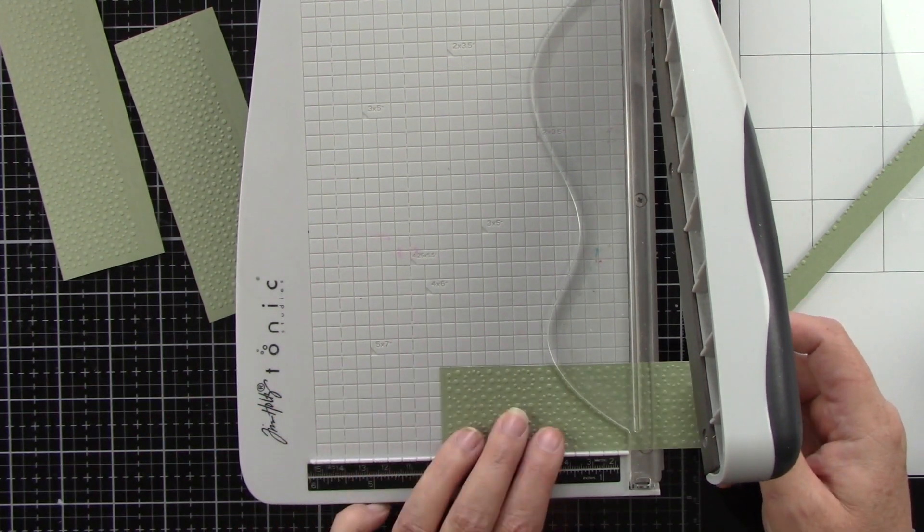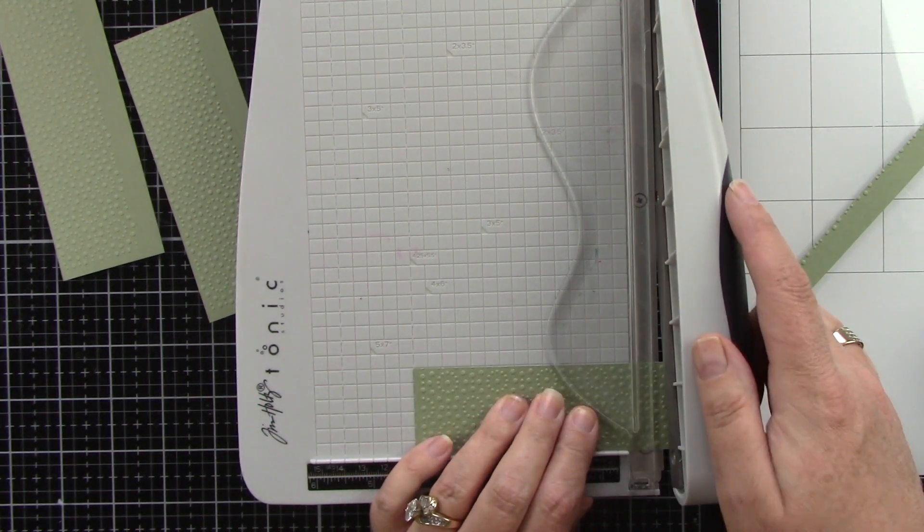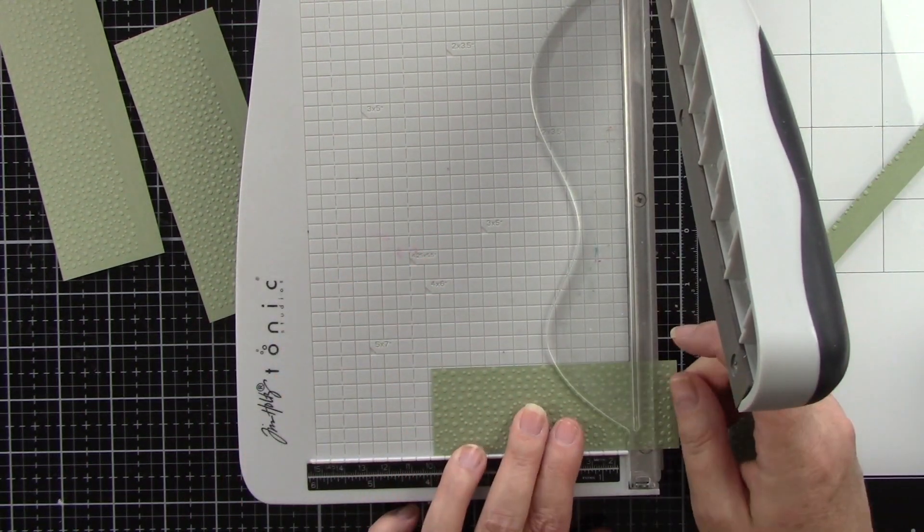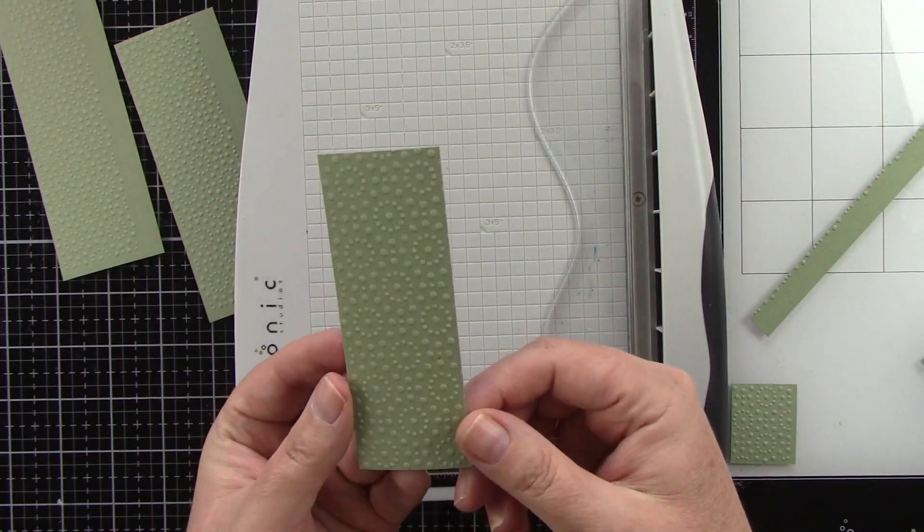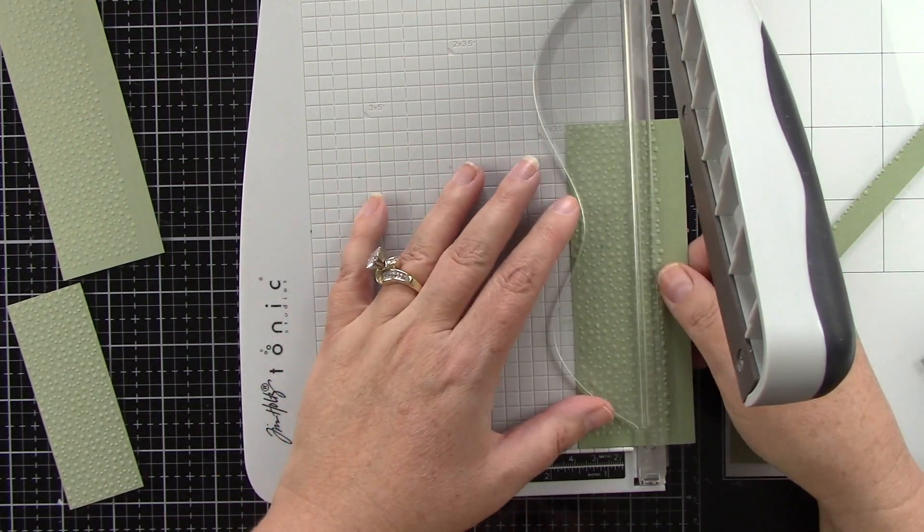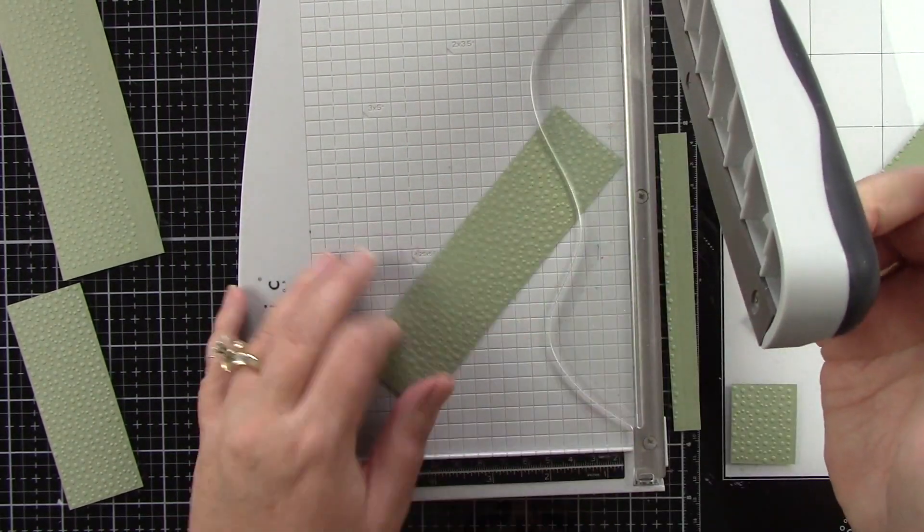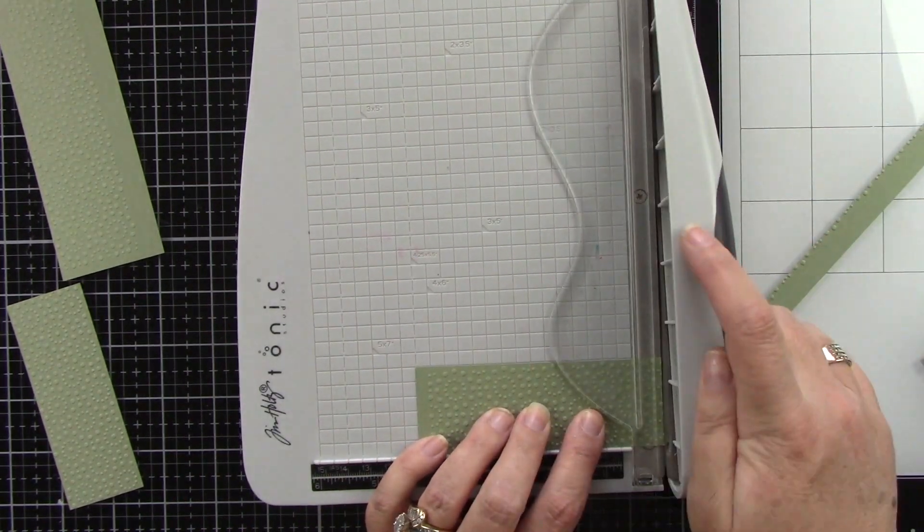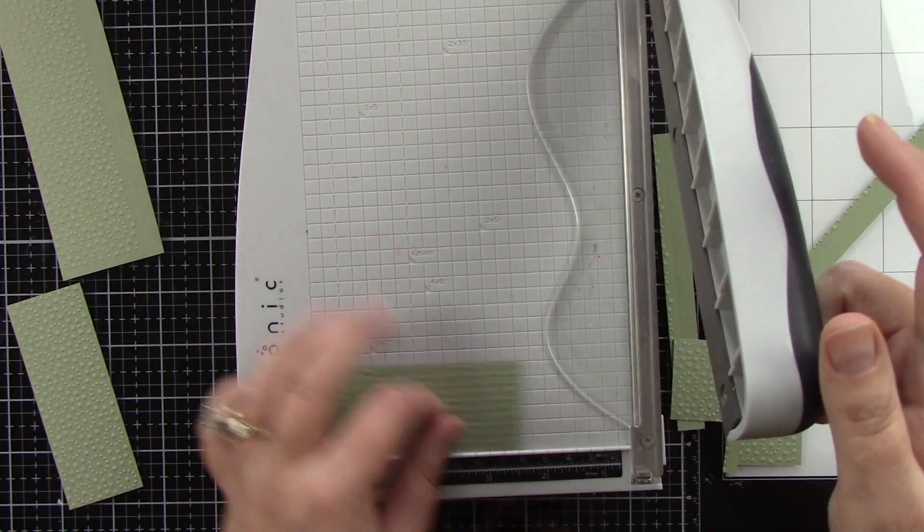Okay so I'm trimming these down again. These are going to be one and a quarter inches by four inches. I actually ended up trimming these down. These were a little bit bigger and then I realized I needed to trim them down more. So that's the final measurement of these.